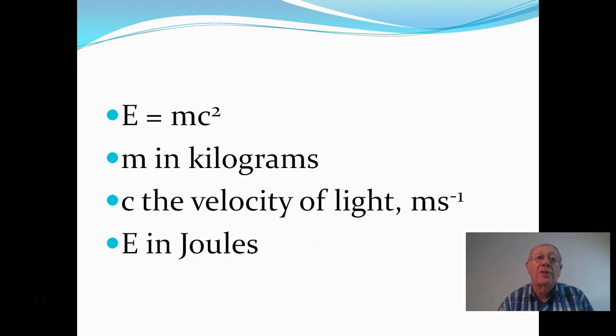This is Einstein's famous equation, E equals MC squared. This equation enables us to work out how much energy comes when we have a mass defect, when we have a mass that is lost in these nuclear reactions.